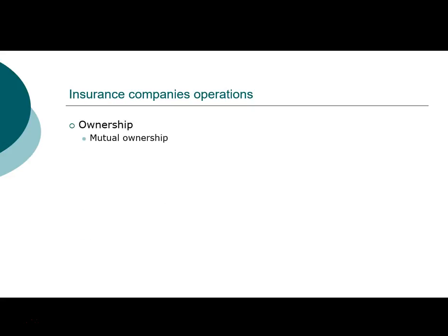The ownership structure of insurance companies is also similar to savings institutions — they can be mutual ownerships, owned by policyholders. For example, Liberty Mutual has the word 'mutual' in the name, indicating mutual ownership. If you are with a mutually owned insurance company, your insurance premium can sometimes be affected by the return on investment by these companies. If the company generates a lot of return, it can actually lower the insurance premiums for its policyholders. In contrast, stock-owned insurance companies are owned by shareholders and premiums are set based on competition in the marketplace.